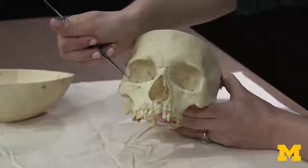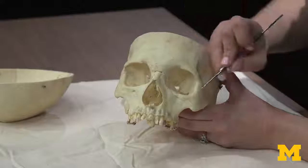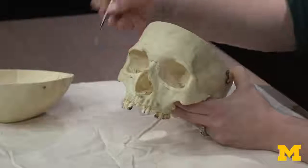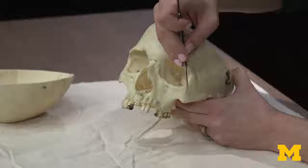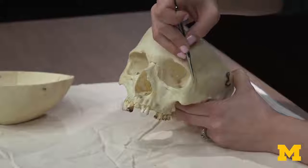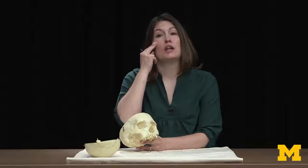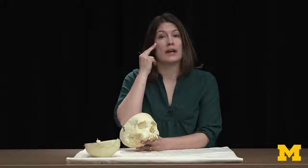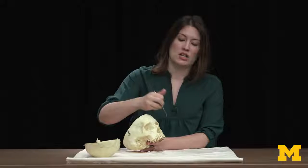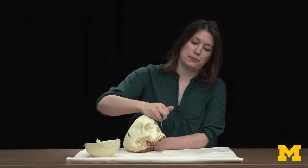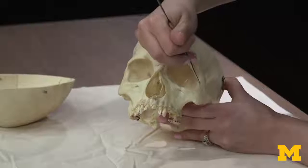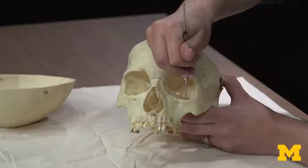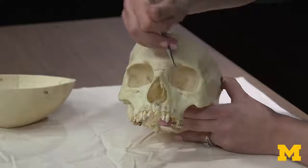The lateral portions of the orbit are going to be your zygomatic bones — one of the coolest names in anatomy. Colloquially we refer to these as your cheekbones, and some people have very dominant cheekbones. The zygomatics are going to form the lateral as well as some of the posterior portion of your orbit.